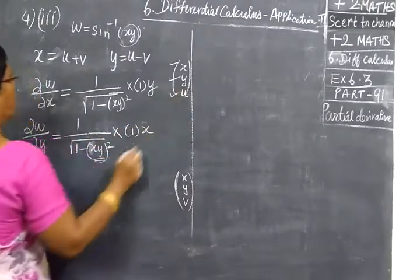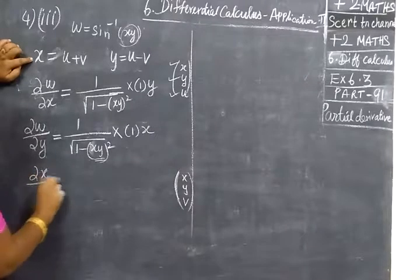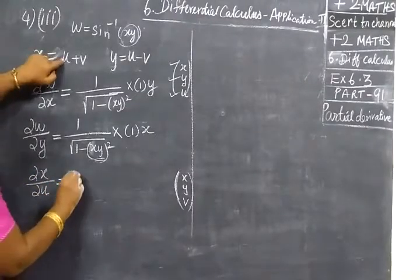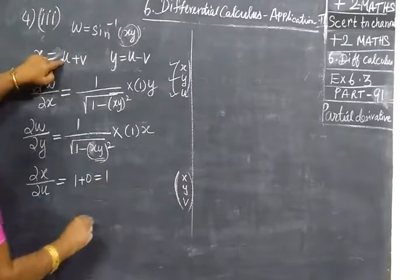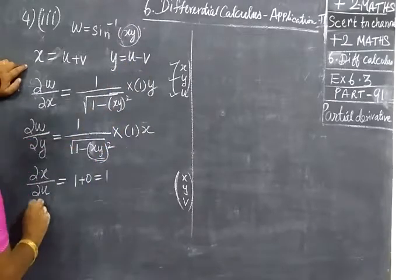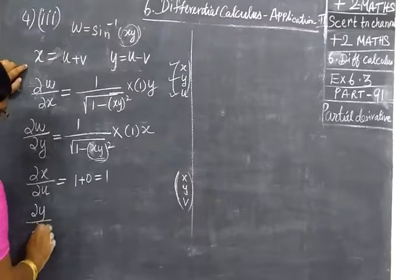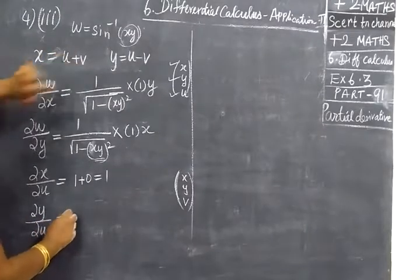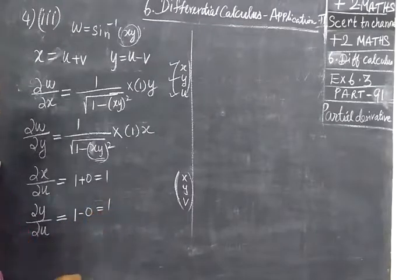Now we come to u. This is u. do-x by do-u: u as it is, 1; v is 0. So the result is 1. This is y, so do-y by do-u equal to u. U is equal to 1, this is 0, so equal to 1.